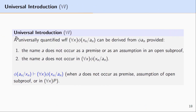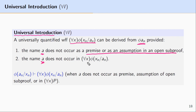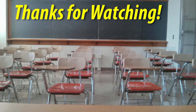Returning to the formulation of the rule for universal introduction: we can reason to a universally quantified formula from a formula containing a name, provided the name does not occur as a premise or assumption in an open sub proof, and the name A does not occur in the resulting universally quantified formula. These restrictions ensure that the name A we're universalizing could be any name, and if it could be any name, it could refer to any item in the domain of discourse.